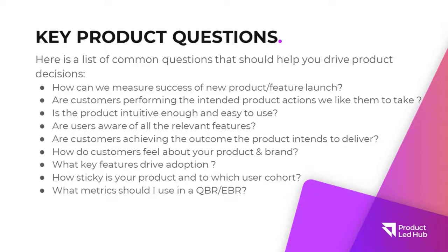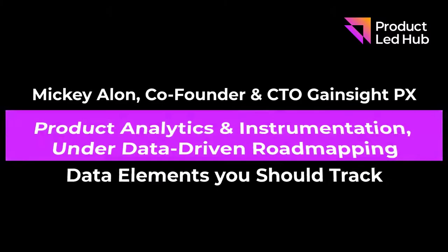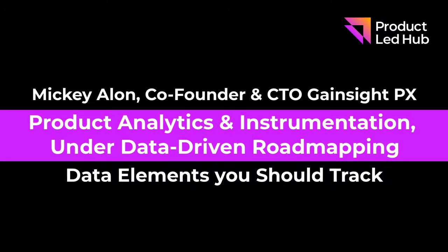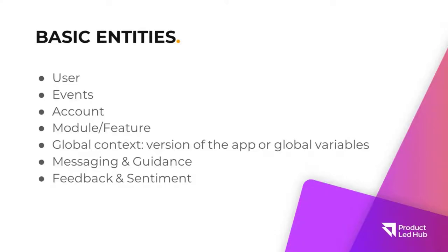What metrics should I use when I go to QBR or EBR sessions? The basic entities you want to track are: the user — obviously the person who is using your product. In Gainsight we also think about the buyer, who might not be using the product but needs to be informed about the value and usage. The events that the user performs with your product. I can be an admin — but what type of behavior am I doing? Account level in B2B is very, very important.